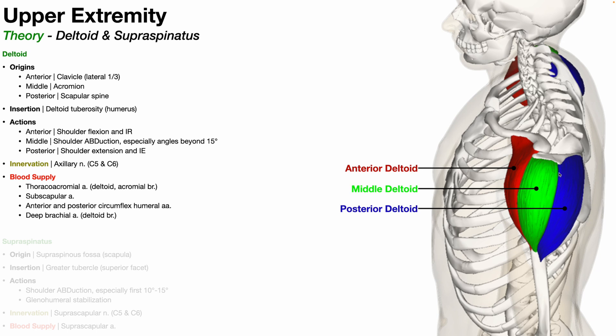The three major regions: in red we have the anterior deltoid, which originates from the lateral one-third of the clavicle. In green we have the middle deltoid, which originates from the acromial process of the scapula, also called the acromion. And the posterior deltoid in blue originates from the scapular spine.